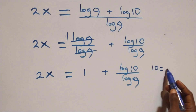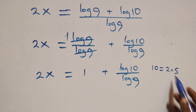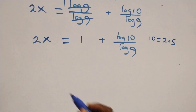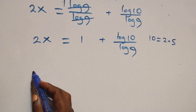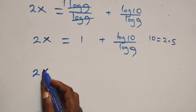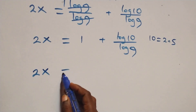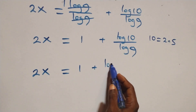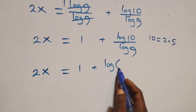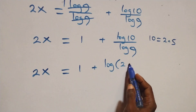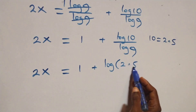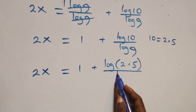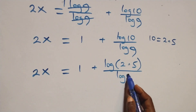Next, 10 can be written as 2 times 5. So all we have becomes 2x equals 1 plus log(2 × 5) over log 9.